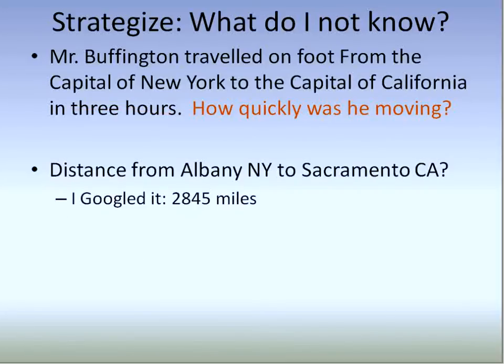So I Googled it. It was 2,845 miles from Albany to Sacramento. So that is my distance. Now I have my distance. I know my time is three hours. I don't know how quickly I was moving. So now my strategy of setting up what exactly do I not know, I'm set.